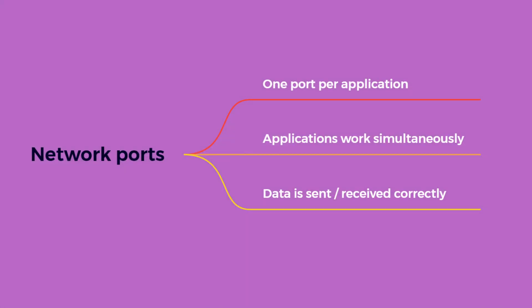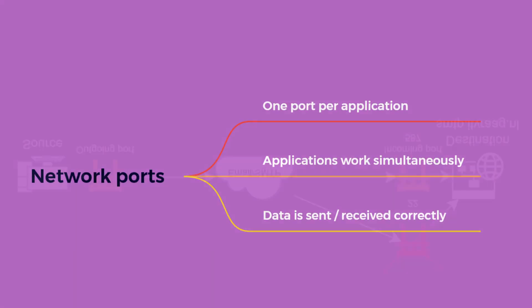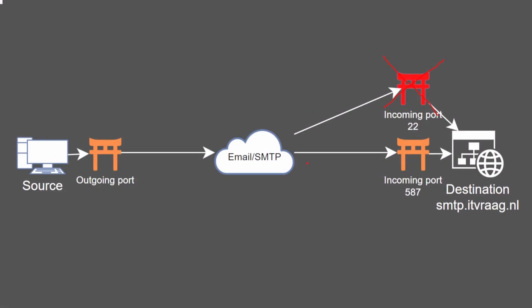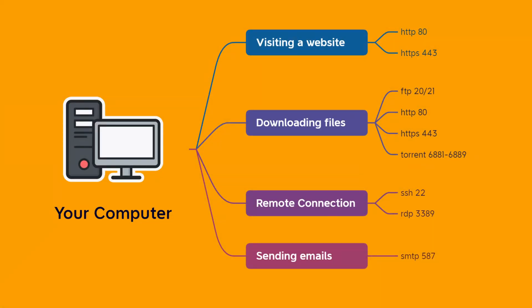Using different ports makes it possible for different types of data to be sent, received, and processed by the right application. If an email was sent to you over the internet to port 22, your computer wouldn't know what to do with it. Assigning an application per port also allows computers to work more efficiently by doing multiple tasks simultaneously — like visiting a website, downloading a file, remote connecting to a host, or sending emails all at the same time.